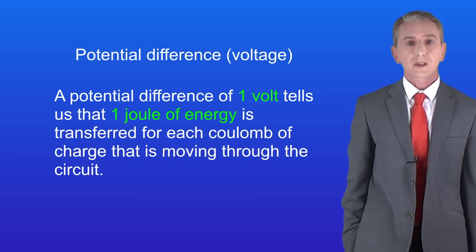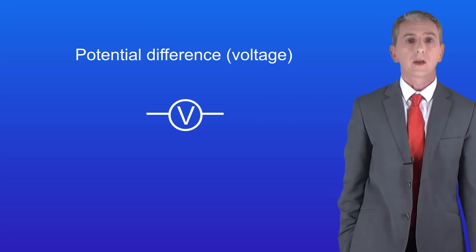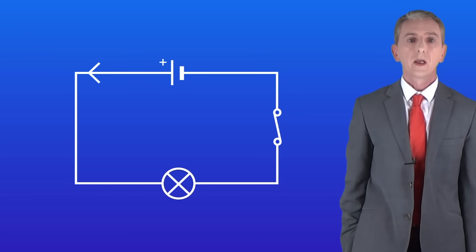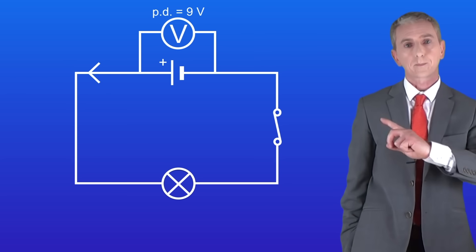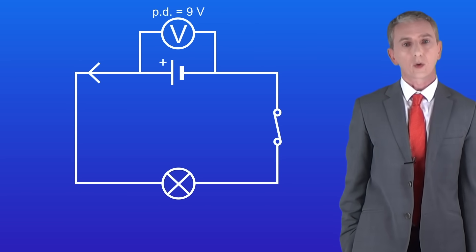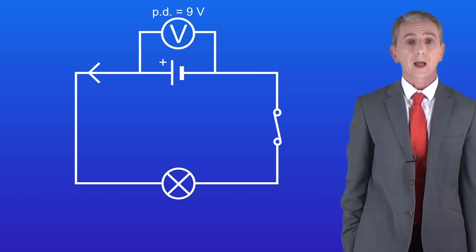We measure potential difference using a voltmeter. I'm showing the symbol for a voltmeter here and it's important that you learn this. Here's a simple electric circuit — to measure the potential difference of the cell I place the voltmeter across the cell like this. In this case the voltmeter gives us a reading of 9 volts, telling us that the electrons are transferring 9 joules of energy per coulomb of charge.